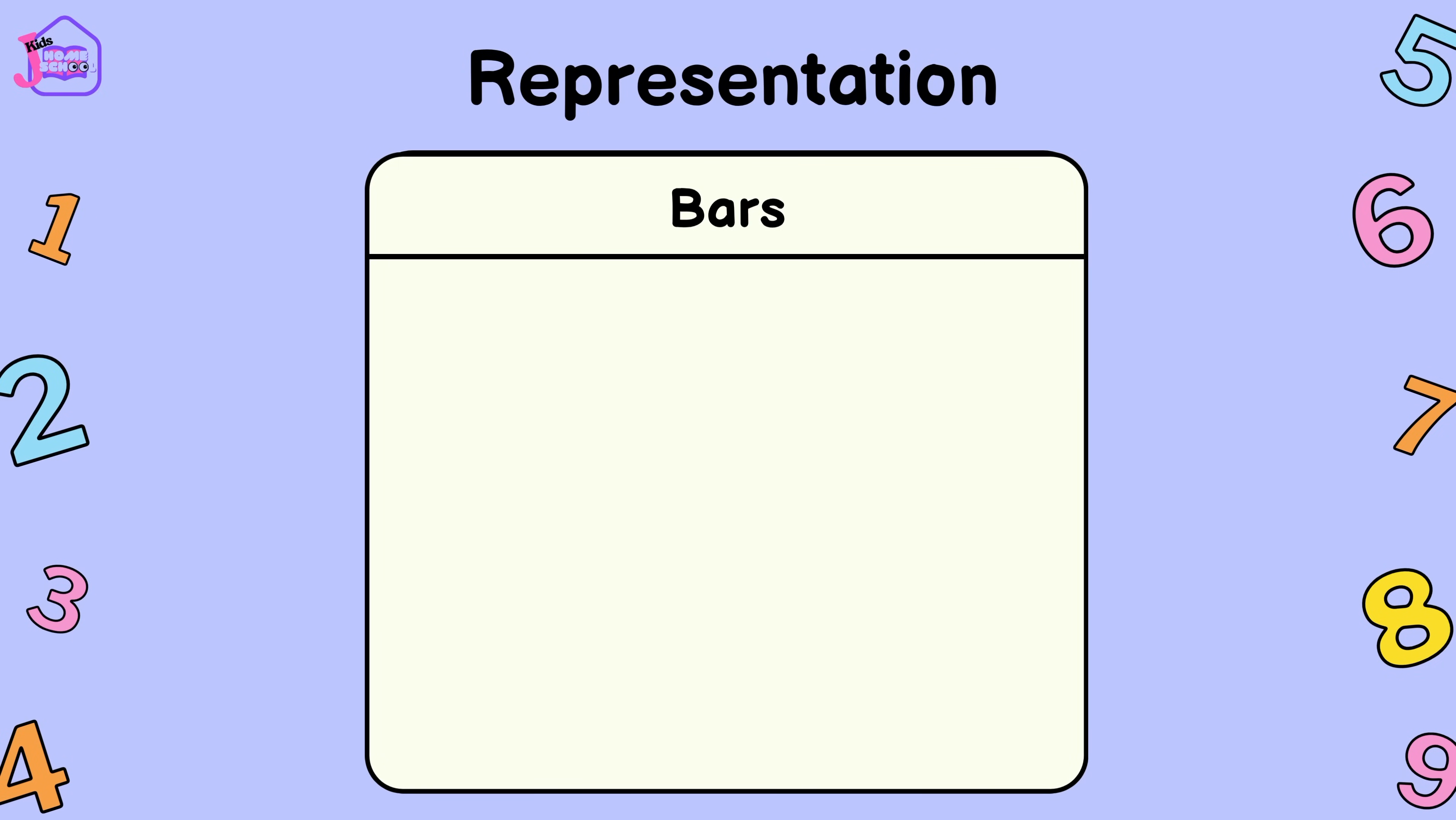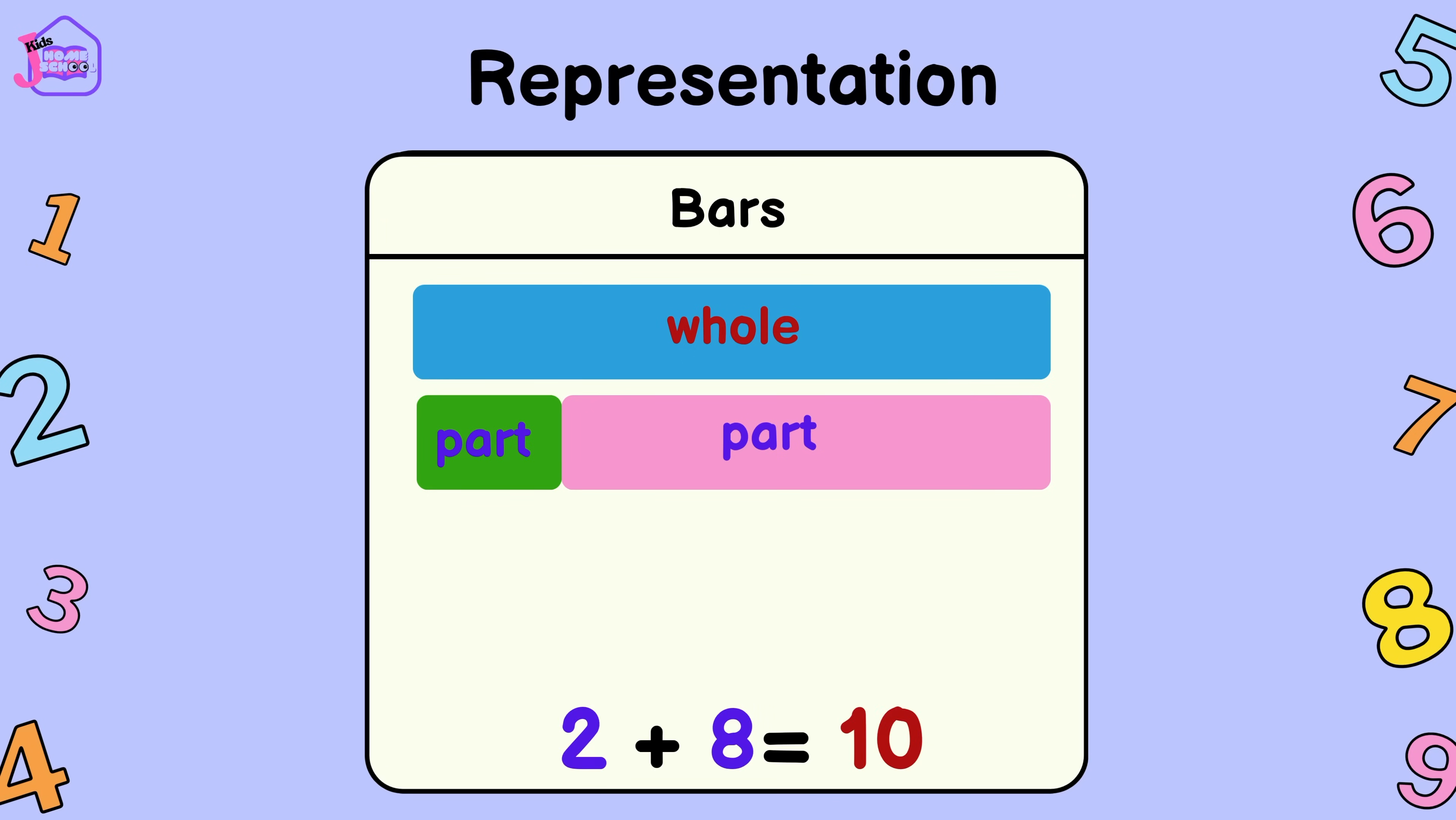There are other ways of drawing a number family. We can draw a long bar that can be our whole, and two shorter bars, which put together will be as long as our whole. Two parts added together will be equal to our whole.